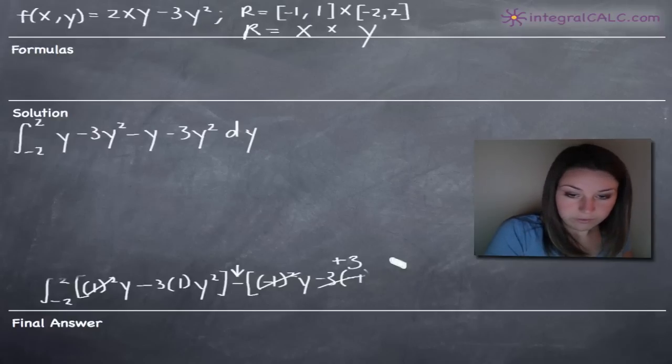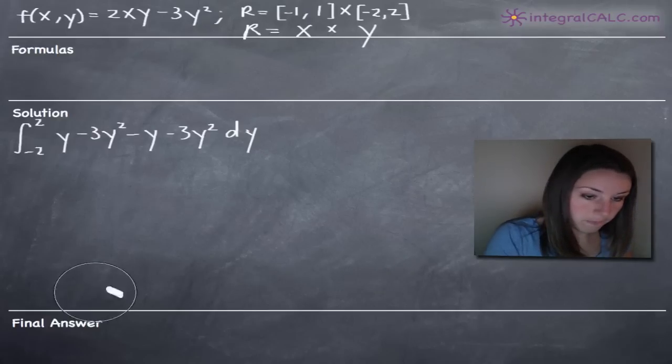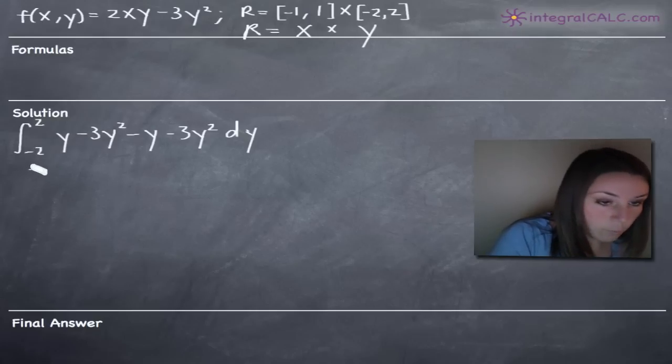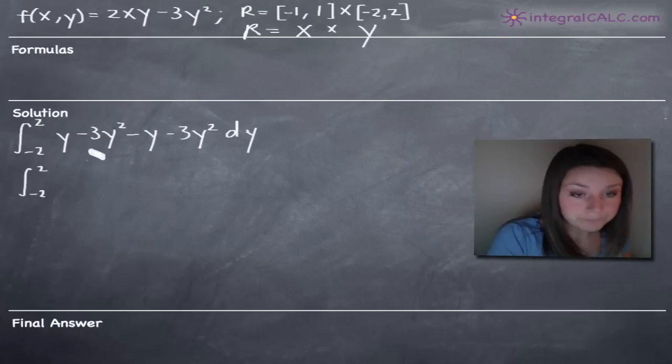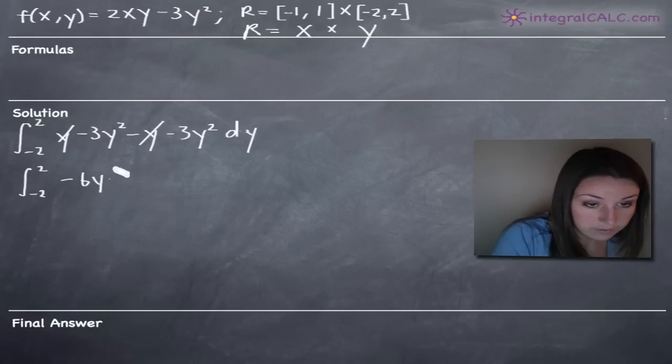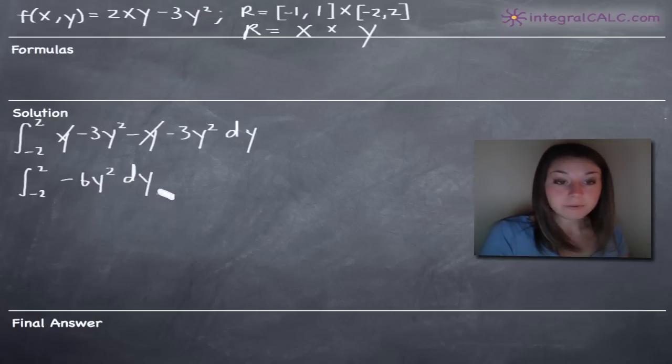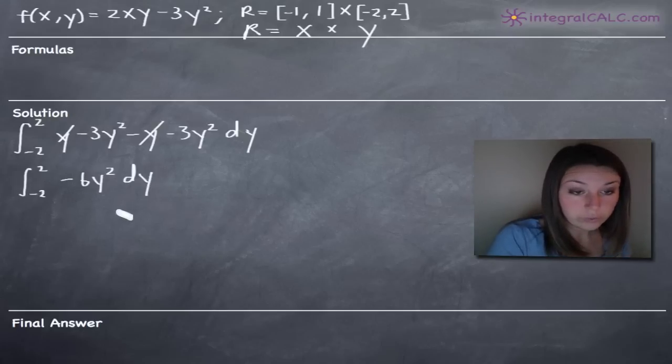One final simplification step before we move on to our y integral. We've got y minus y, so that's going to go away. Negative 3y squared minus 3y squared is negative 6y squared dy. We've finally simplified down to the simplest form of the integral with respect to x. That part's now done, and now we can integrate with respect to y.